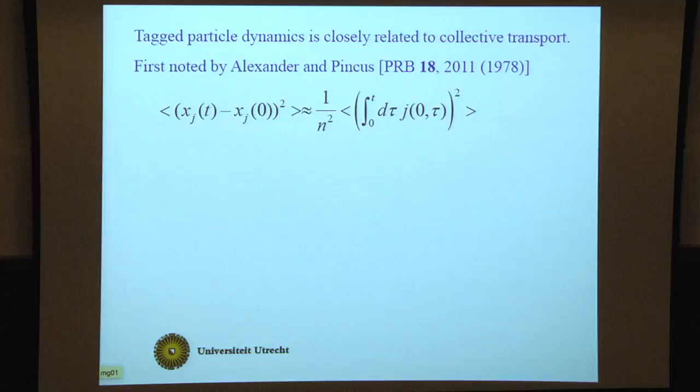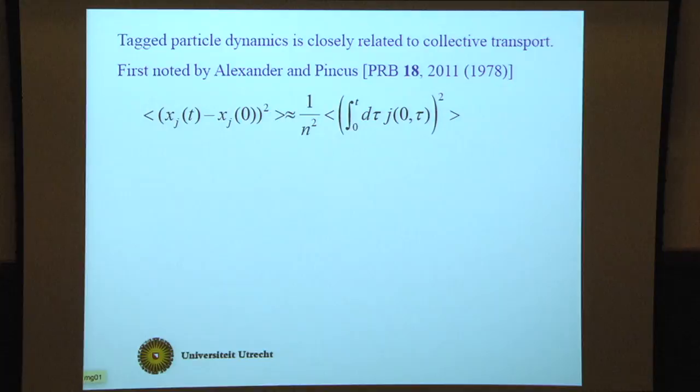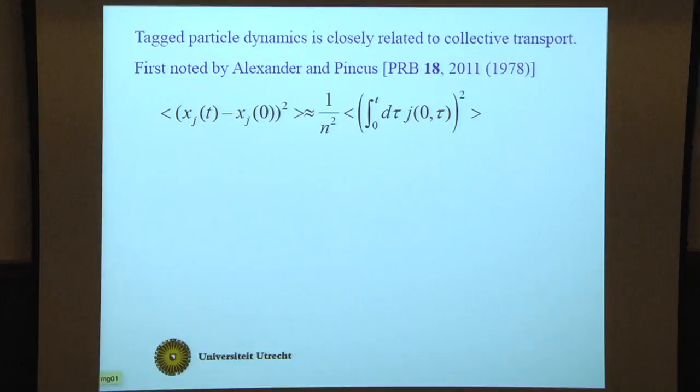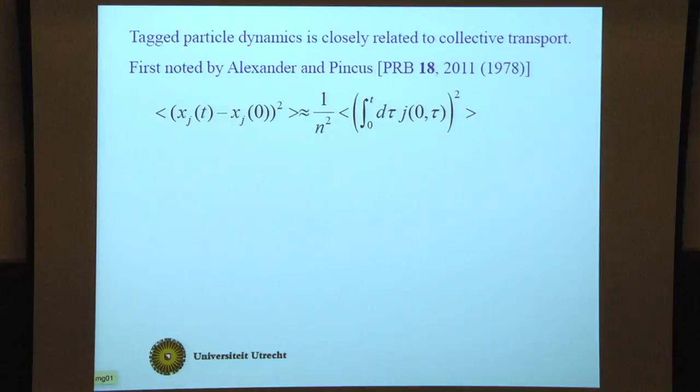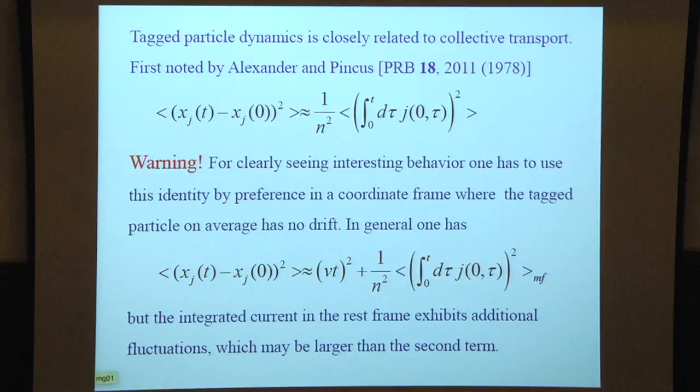This was first noted by Alexander and Pincus long time ago in Physical Review. They said if you have particles that can't pass each other and you want to know the mean square displacement of any particle, you can look at the current through the origin integrated from initial time up to time t, multiply by the average distance between neighboring particles, square that, and you'll find the mean square displacement.